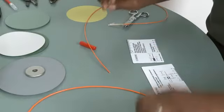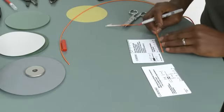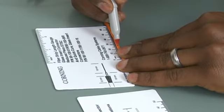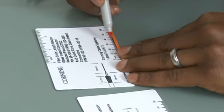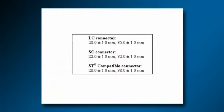I'm going to do the same thing with my 2.9 millimeter jacketed cable, but this time I'm going to make a mark at the 22 millimeter point and 32 millimeter point. For the ST connector, those marks are 28 millimeters and 38 millimeters.